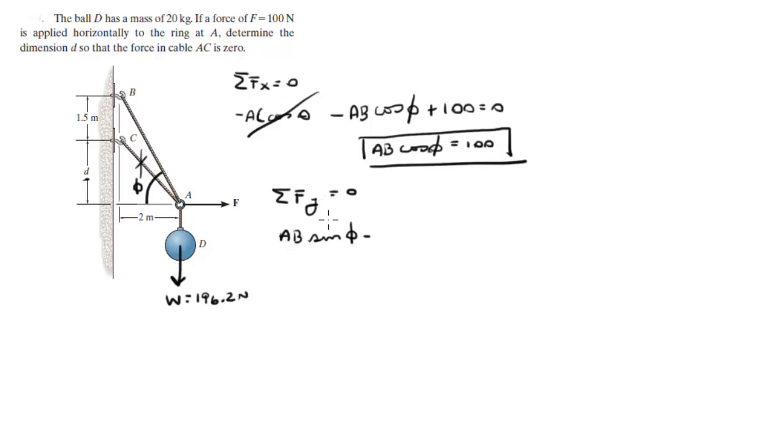So the sum of the forces in the Y is the Y component of this AB force minus 196.2 is equal to zero. So AB sin of phi is equal to 196.2.